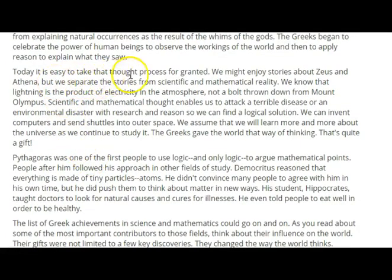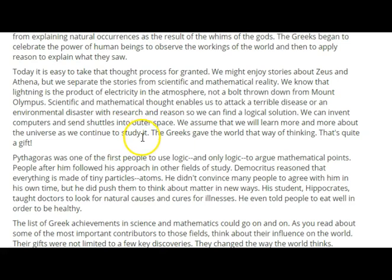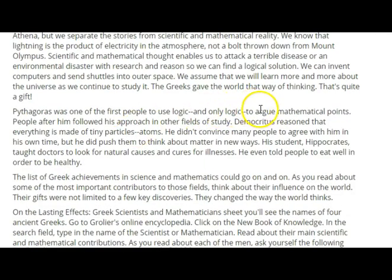Today it is easy to take that thought process for granted. We might enjoy stories about Zeus and Athena, but we separate those stories from scientific and mathematical reality. We know that lightning is the product of electricity in the atmosphere, not a bolt thrown down from Mount Olympus. Scientific and mathematical thought enables us to attack a terrible disease or an environmental disaster with research and reason to find a logical solution. We can invent computers and send shuttles into outer space, and the Greeks gave the world that way of thinking — and that is quite a gift.